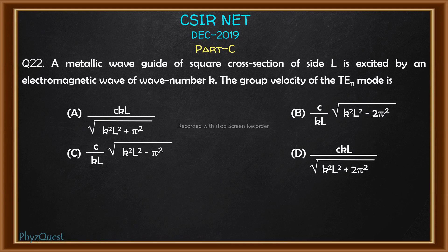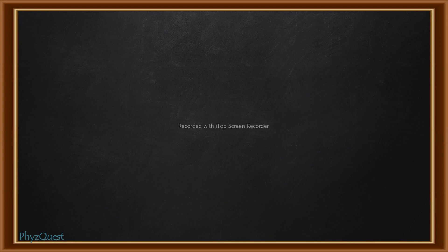Hello, welcome to FizzQuest. This is the solution video for CSIR-NET December 2019 Part C, question number 22. The question is: a metallic waveguide of square cross-section of side l is excited by an electromagnetic wave of wave number k. We need to find the group velocity of the transverse electric TE11 mode from four given options.